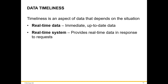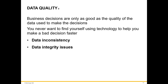Timeliness is an aspect of data that depends on the situation. Real-time data means immediate and up-to-date data. For example, 911 centers and stock traders need up-to-the-second data. Real-time systems provide real-time data in response to requests. Business decisions are only as good as the quality of the data used to make them. We never want to use technology to make a fast but bad decision.